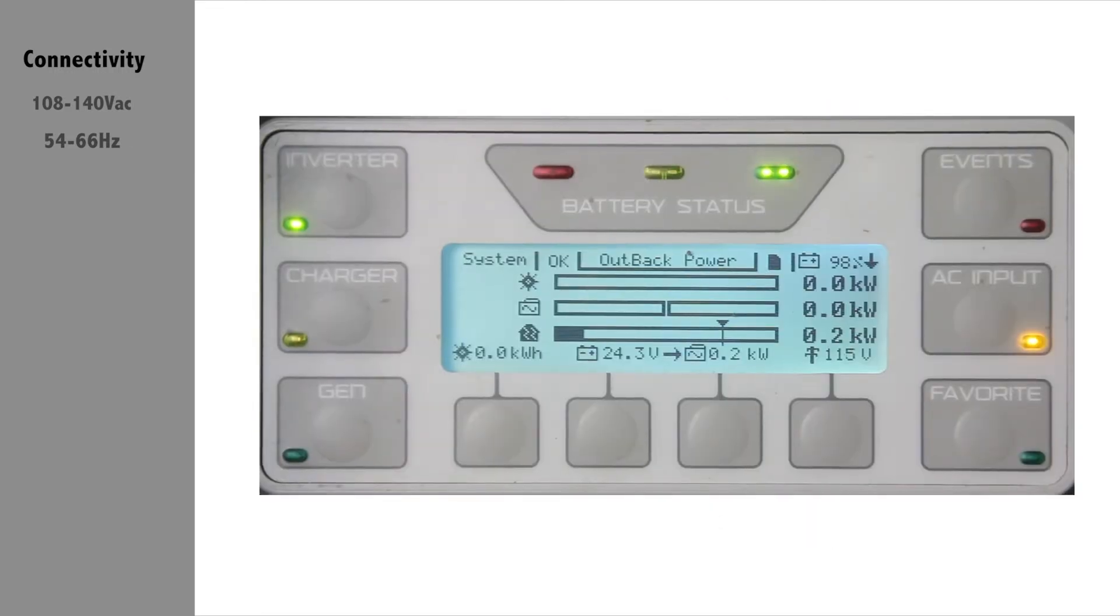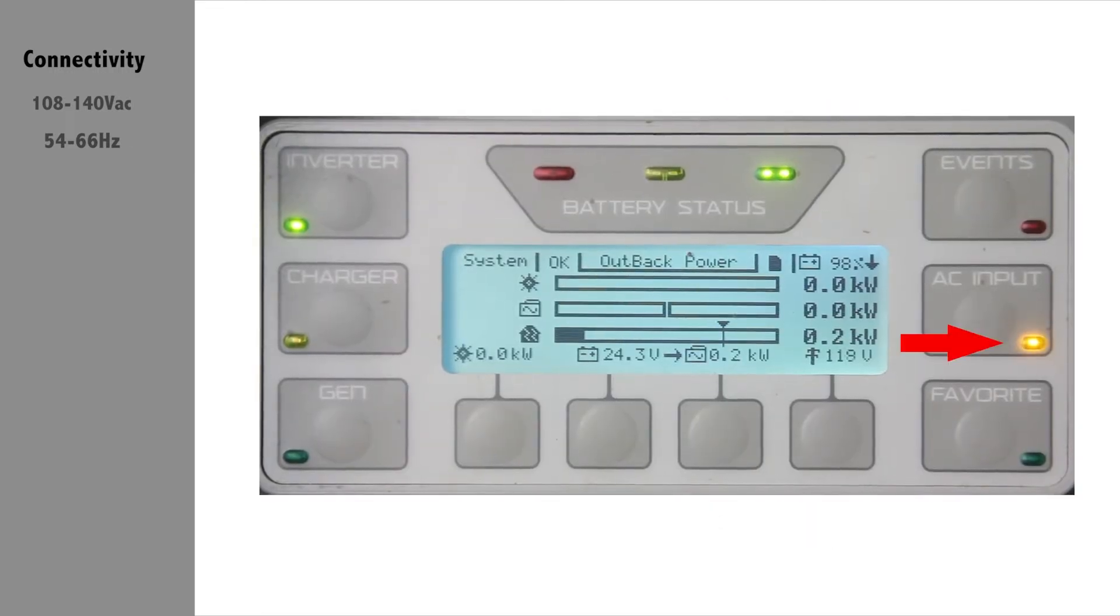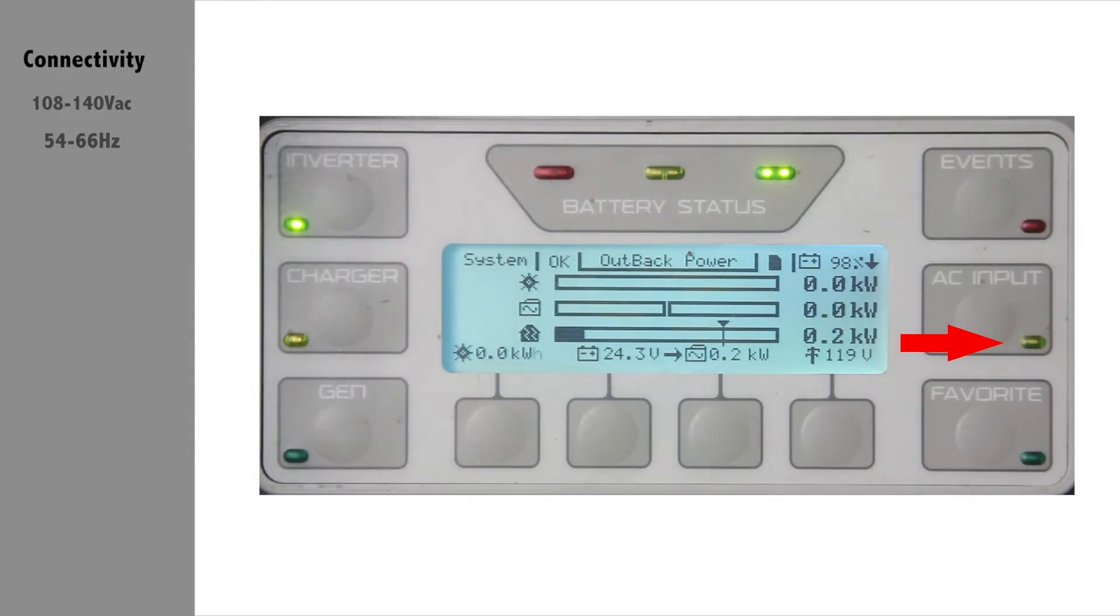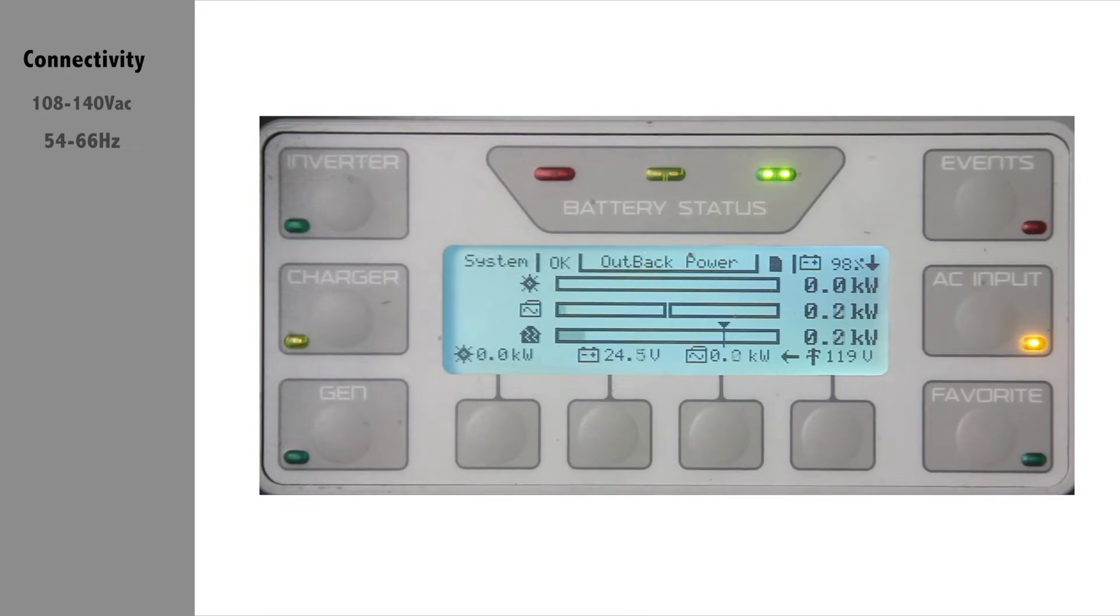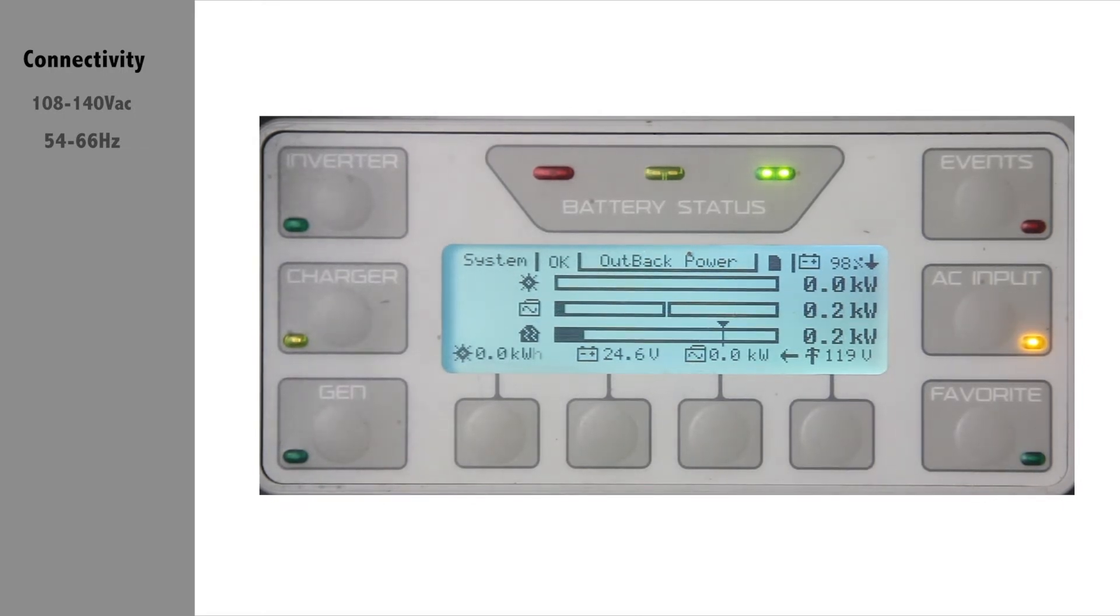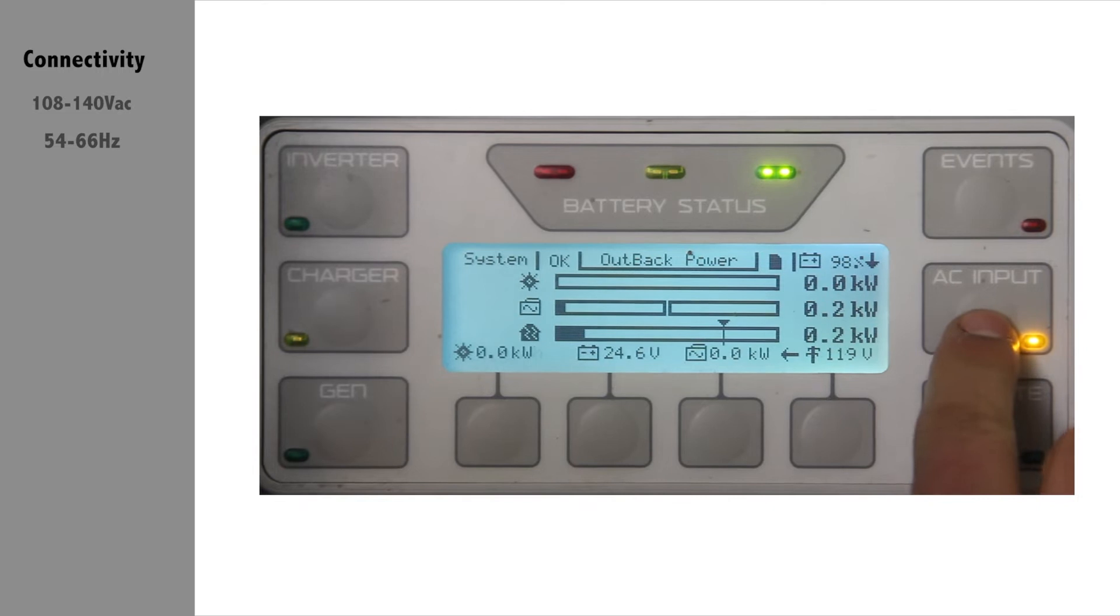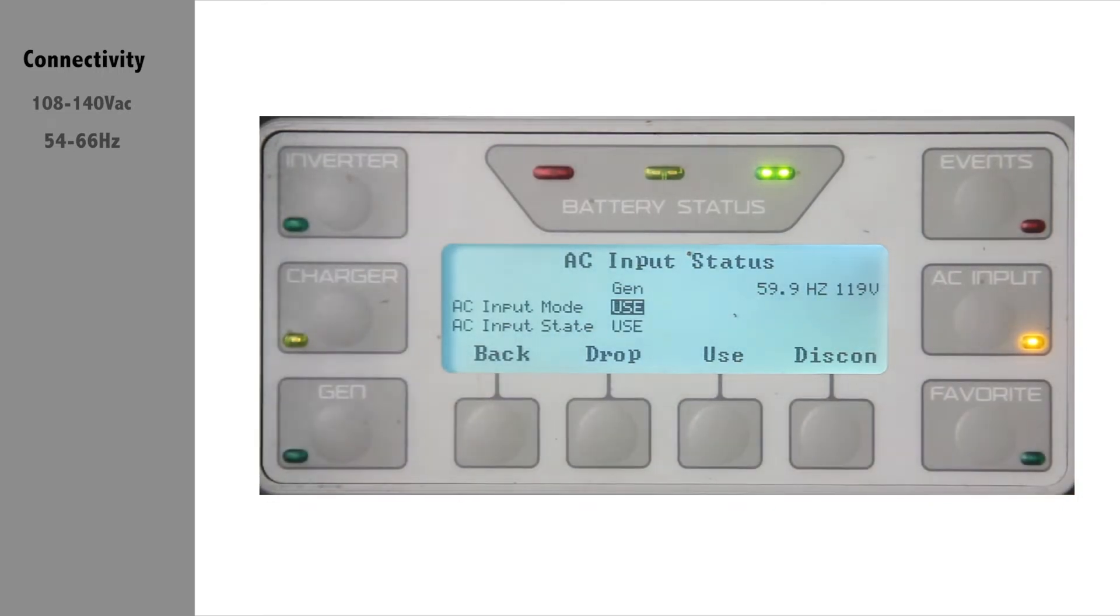The Mate 3 will show when the AC source is present with a blinking AC input light. Once the source is accepted and connected, the amber light will turn solid and simultaneously the green inverter light will turn off. If it doesn't, press the AC input button and make sure your AC input mode is set to use.